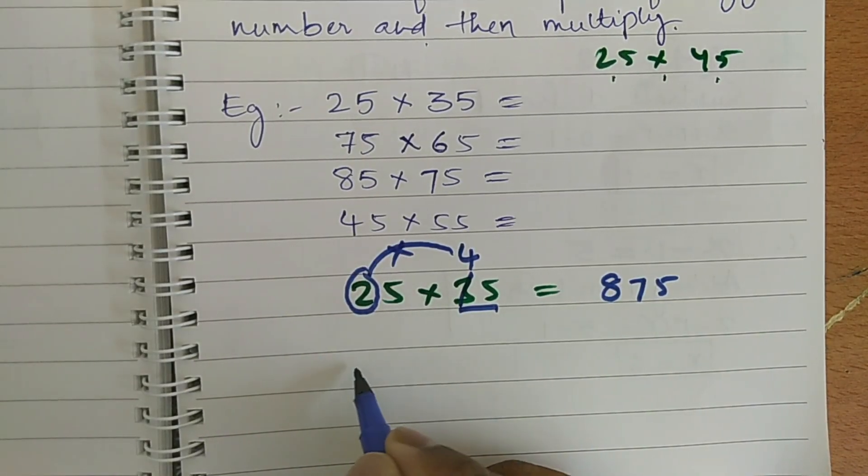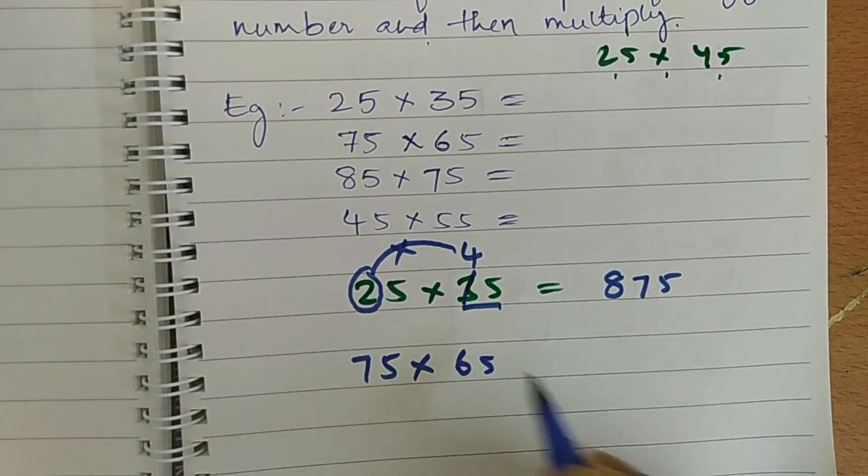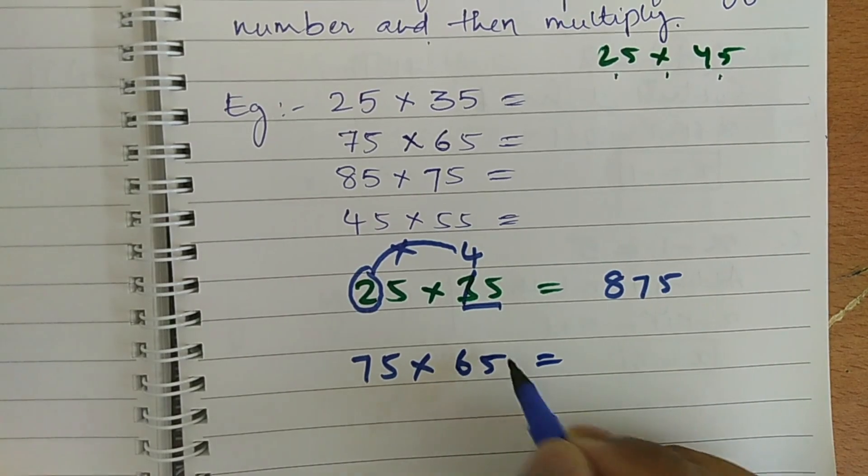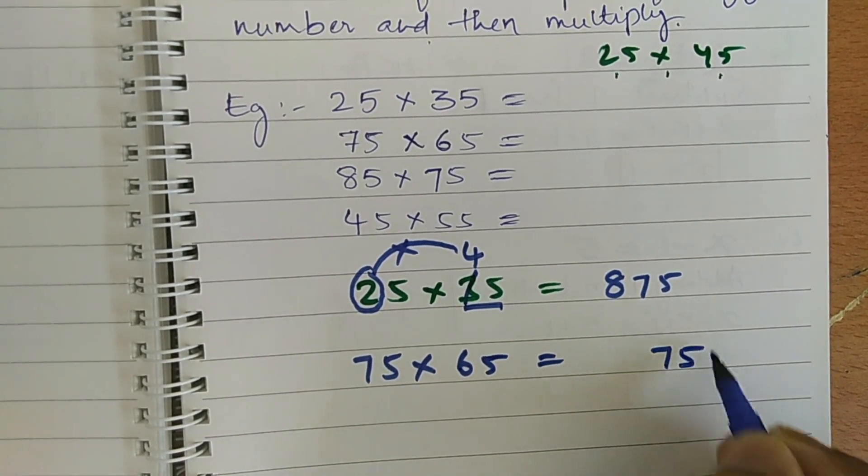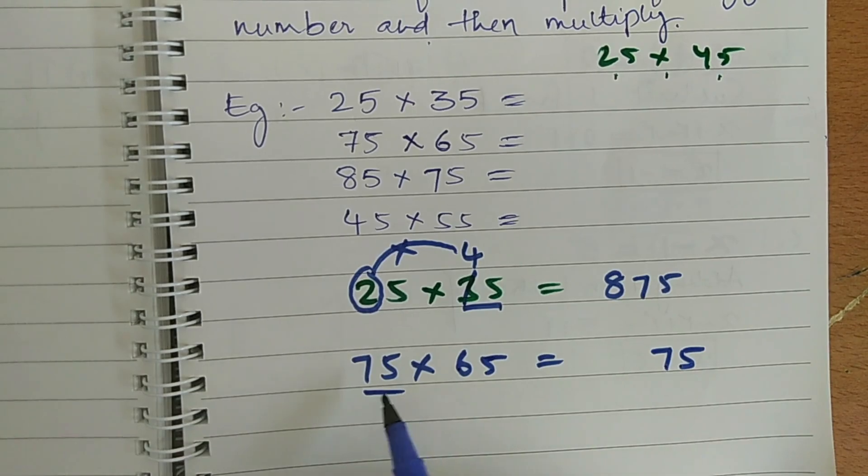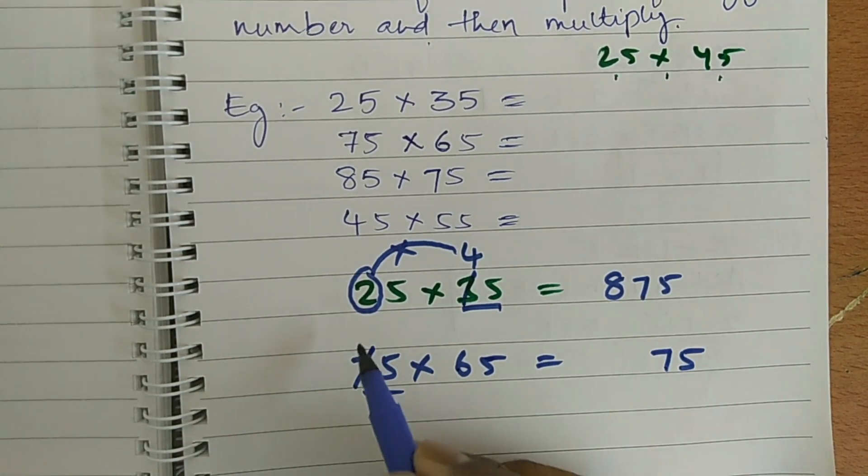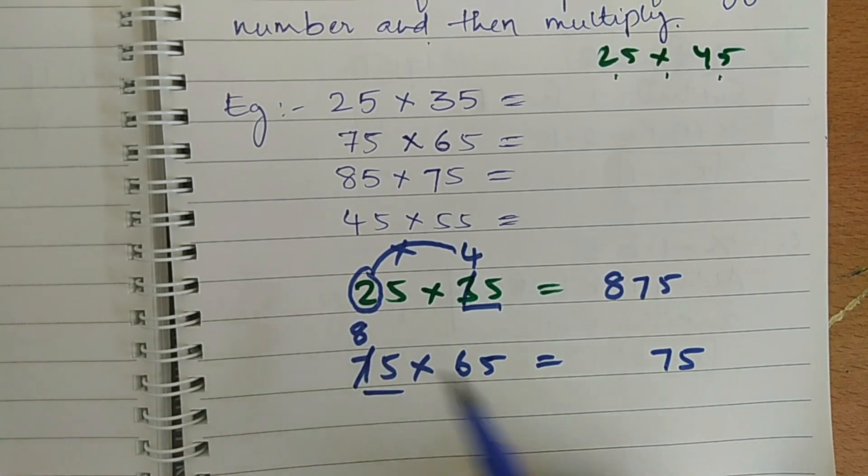Let us see one more here, 75 into 65, 75 into 65. Now, first step, write 75 at the end. Now, compare the two numbers, here 75 is the biggest number, 7 is in 10th place. So, increase one number here, so 8.